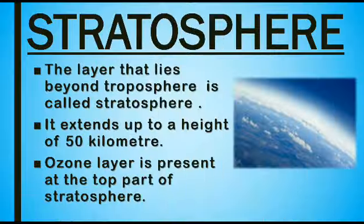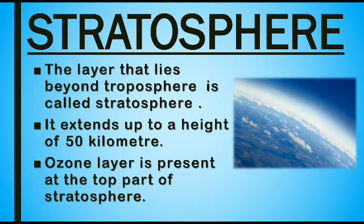Now we will learn about stratosphere. The layer that lies beyond troposphere is known as stratosphere. It extends up to a height of 50 km. In this layer, temperature remains constant up to a height of 20 km, but at an altitude above 20 km it starts rising and continues rising up to the height of 50 km. This is because of the presence of the ozone layer which absorbs ultraviolet rays of the sun.